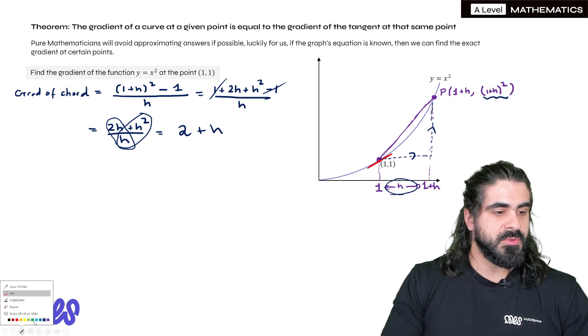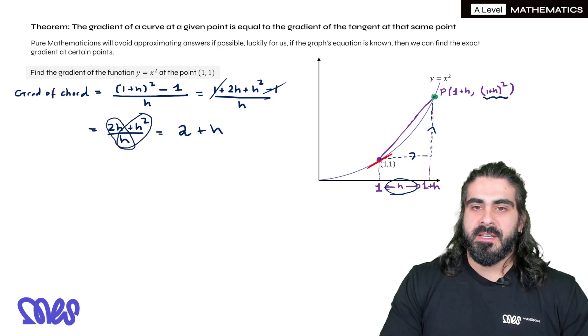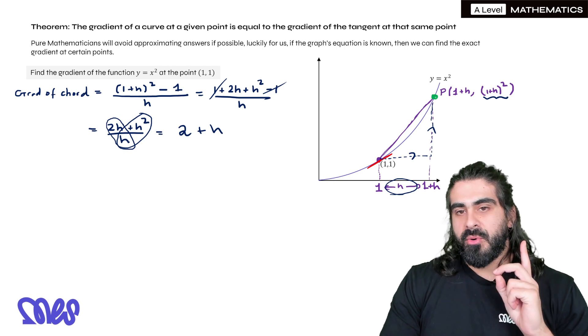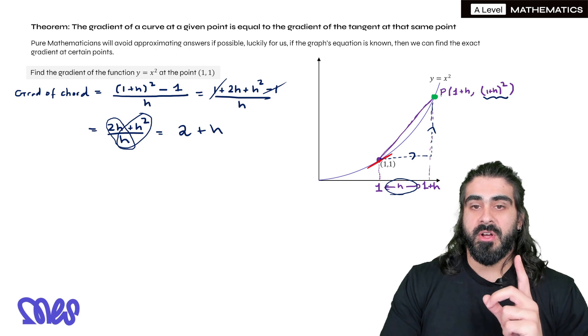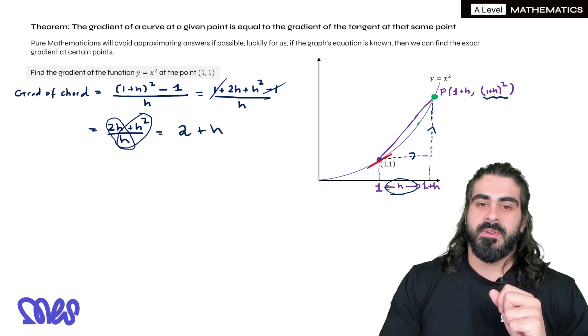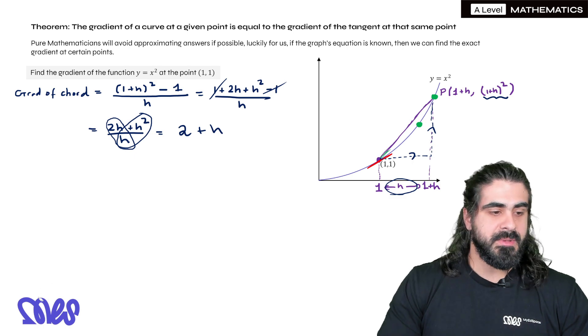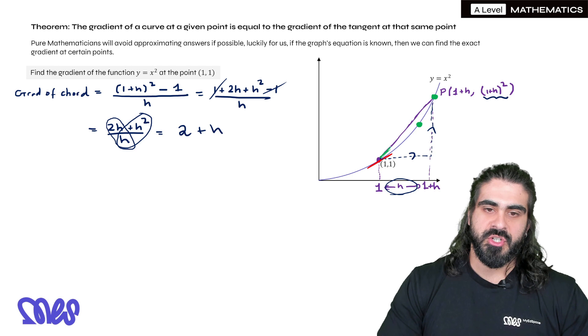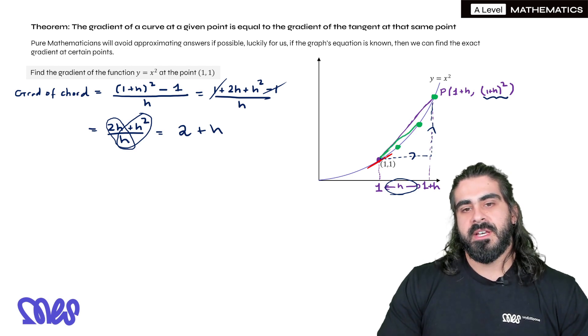But now is where the theory side comes in. I drew that point P here. Where could I have drawn that point P to get a better approximation of that red line? Well, the answer to that is I need to move it closer. Because now if I draw a line here, it would be much shallower than the chord we initially drew. What if I made it here? That's even better.